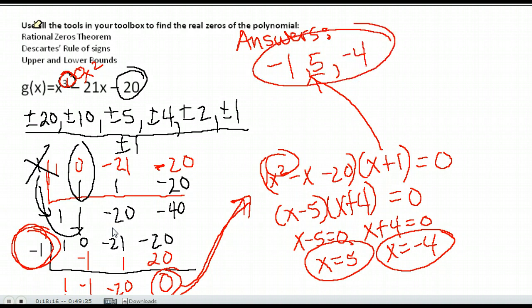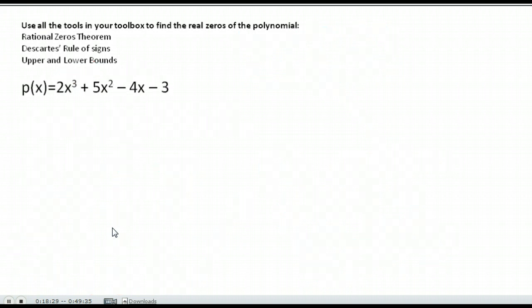Again, we couldn't have done that without our synthetic division. We have to find one zero first to break our polynomial down to an x squared, so we can actually do some factoring or use the quadratic formula.